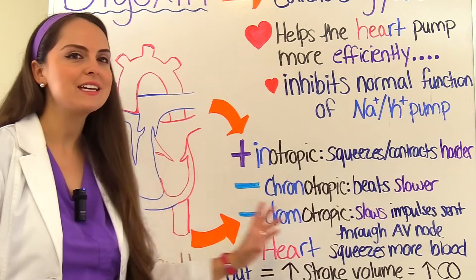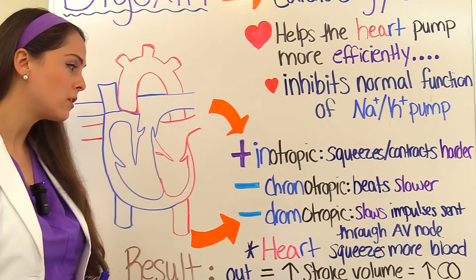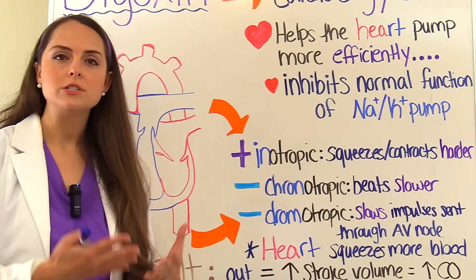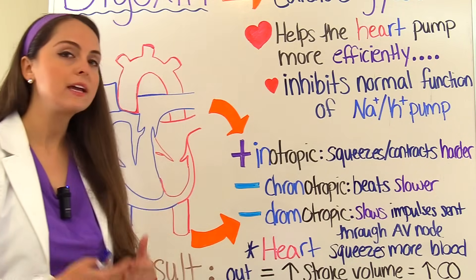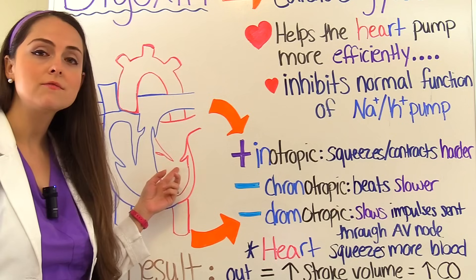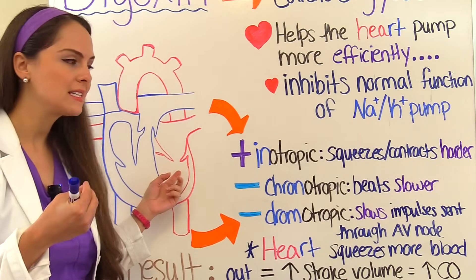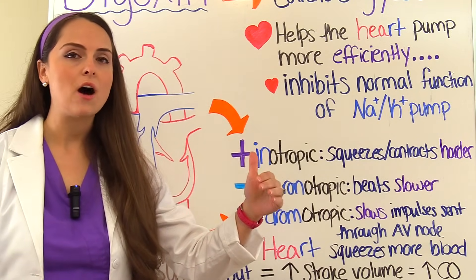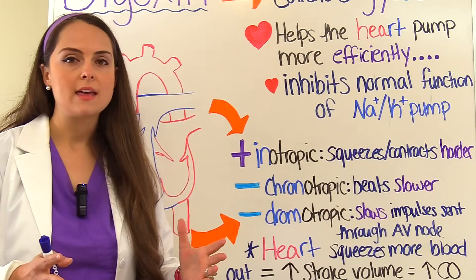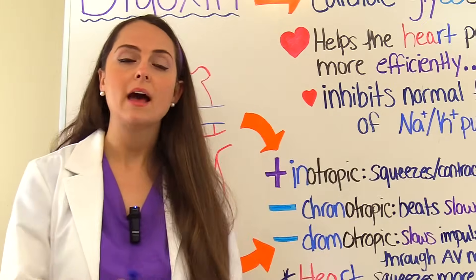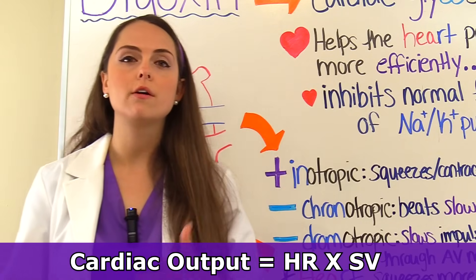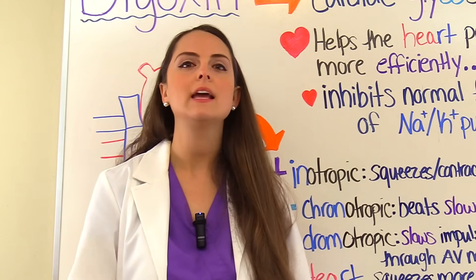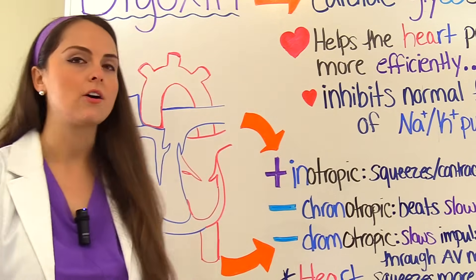When we combine all these actions, the result is that the heart squeezes more blood out and more blood leaves the heart, increasing stroke volume. Stroke volume is the amount of blood leaving the ventricle with each beat. When we increase stroke volume, we increase cardiac output — and we need good cardiac output so our organs are perfused. Cardiac output is calculated by heart rate times stroke volume, and since digoxin increases contractility, we will get increased cardiac output.